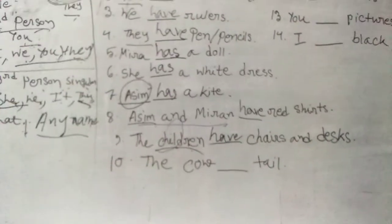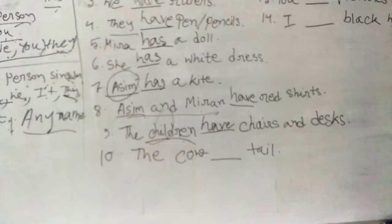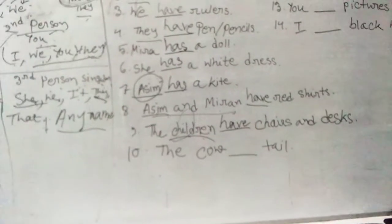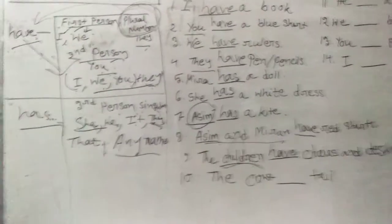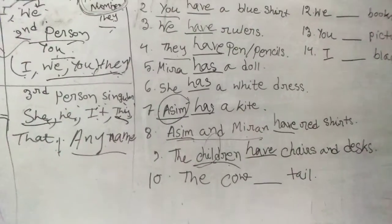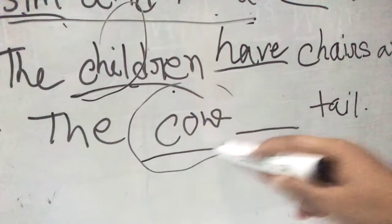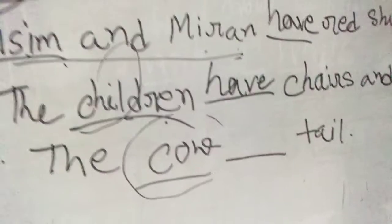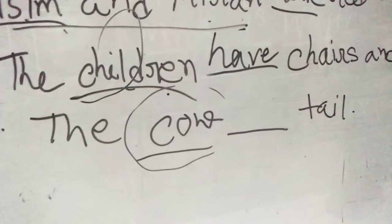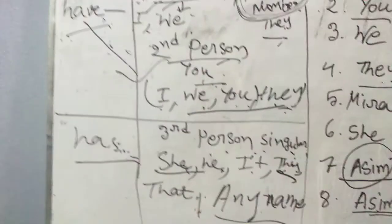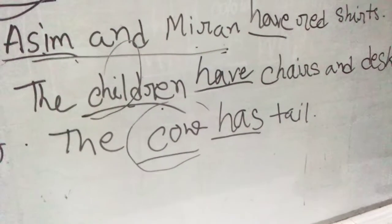Number ten: 'The cow ___ a tail.' The cow — it is indicating only one cow, not cows. If it were 'cows' with an 's', that would be plural and we'd use 'have'. But it is just 'cow' — no 's' — so it is singular number. After a singular number we put 'has': the cow has a tail.